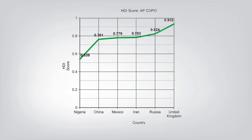Let's look at our six course countries: Nigeria, China, Mexico, Iran, Russia, and the United Kingdom. The higher your HDI score, the more developed the country. The United Kingdom has a significantly higher HDI score than Nigeria and Iran, indicating a better standard of living. We see a lot of countries with similar HDI scores — like China, Mexico, and Iran — so we can conclude they have very similar standards of living, though Iran scores slightly better and China slightly worse.